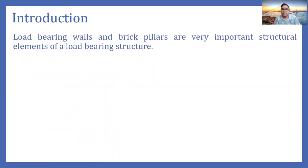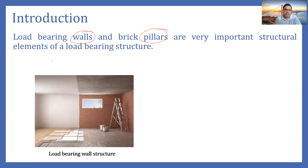Walls and pillars can be load bearing and non-load bearing. Only load bearing structures are designed. In brick masonry, load bearing structures can be constructed using walls or pillars. Here is an example of a wall structure which is load bearing — a room covered by an RCC slab, where the slab rests on the brick wall. Because this wall carries the load of the slab, it will be designed as a load bearing wall.